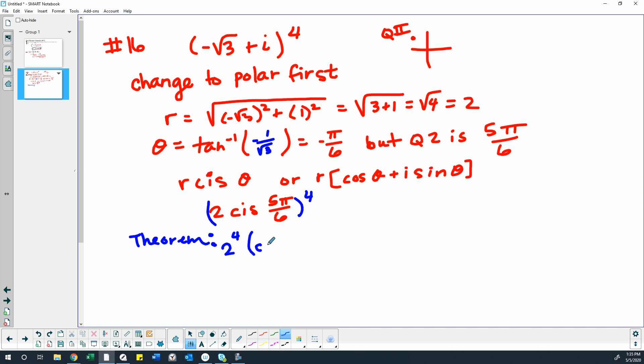And then it'll be, I'm going to actually write this out, cosine of 5 pi 6 times 2, no, times 4.